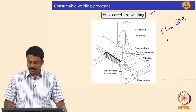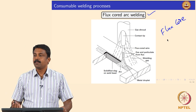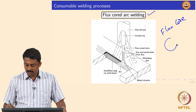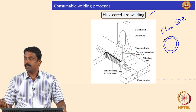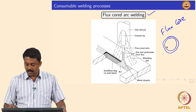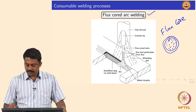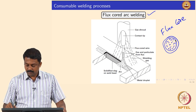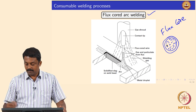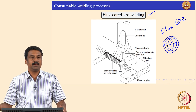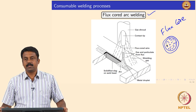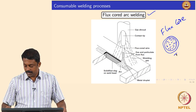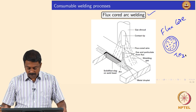The only difference here is the electrode geometry. We have a tube made of the material of interest, and then you fill the tube with the flux. The flux composition is the same as in MMAW — in most cases, rutile-based or titanium oxide-based fluxes.